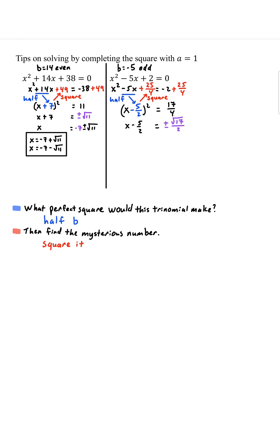Negative 2 plus 25 over 4 is 17 over 4. Square both sides. We have plus minus square root of 17 over 2. Add 5 halves both sides. And then if you want, you can write out the two solutions separately.